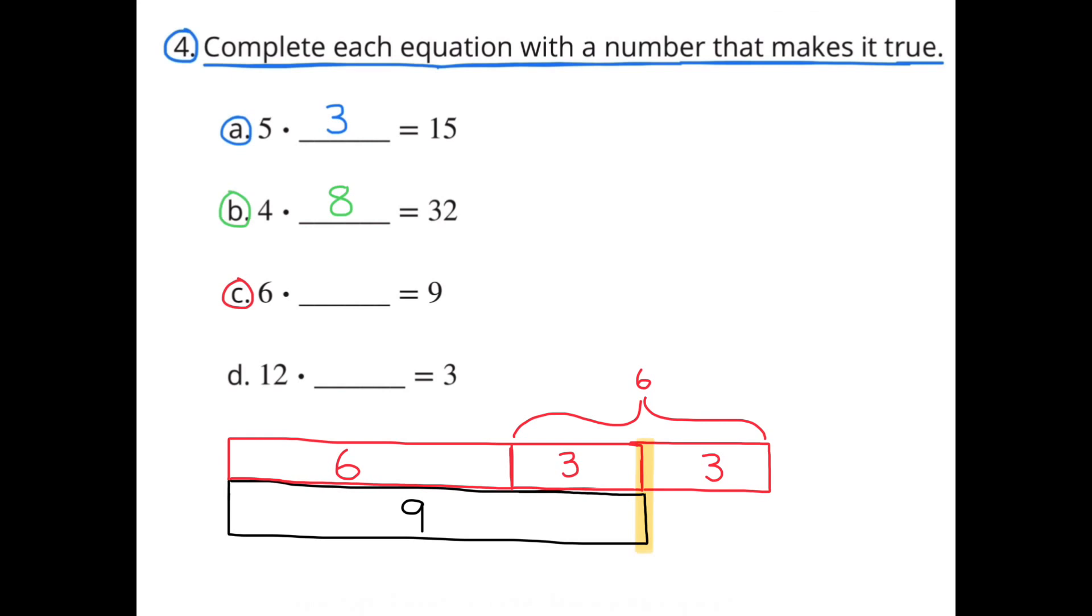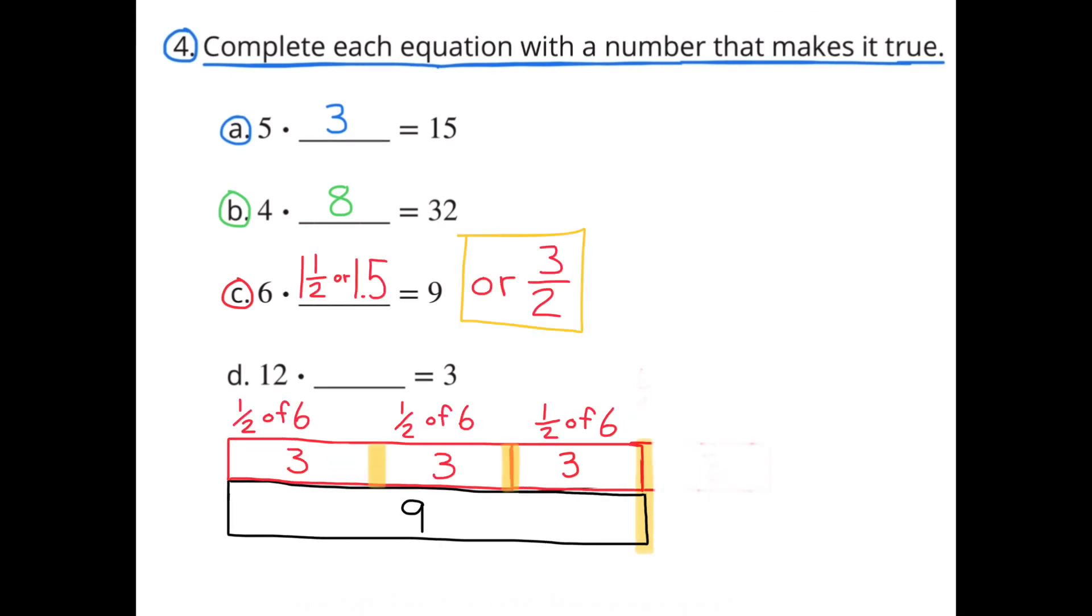So 6 times 3 halves also equals 9. So 6 times 1 and a half, or 6 times 1.5, or 6 times 3 halves, equals 9.